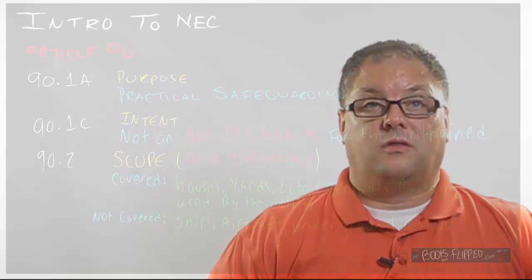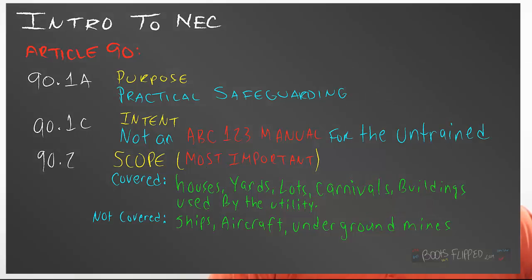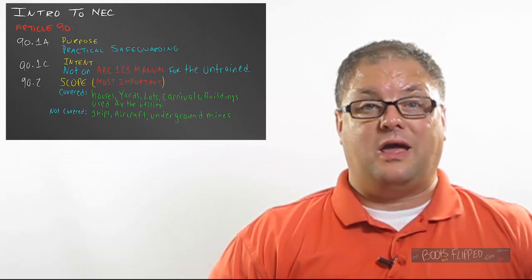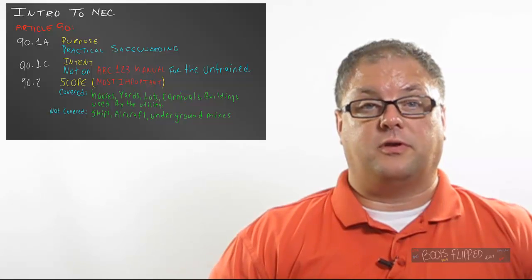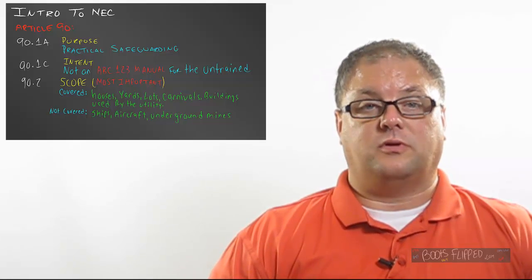Let's get into Article 90. The purpose of Article 90 — we discussed it in the last class — it's the practical safeguarding of people and equipment. We're trying to keep people from dying and equipment from exploding. That's what we're doing.